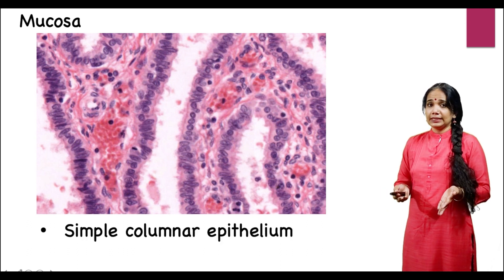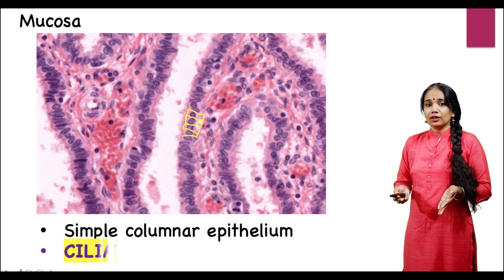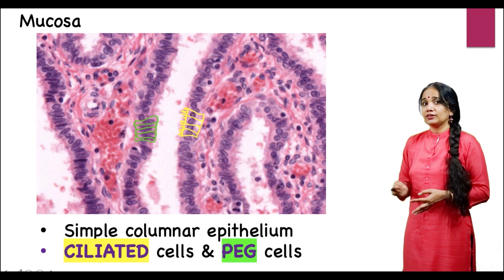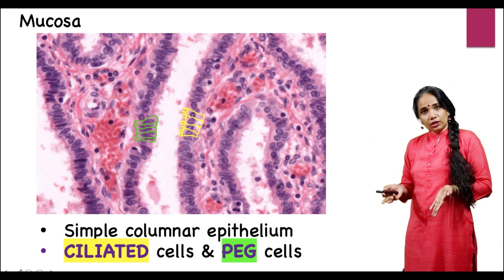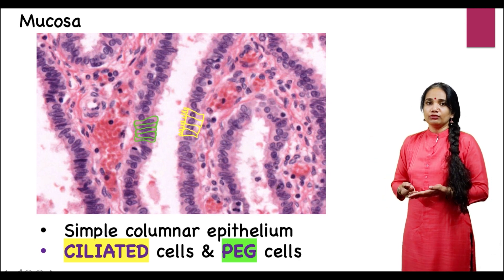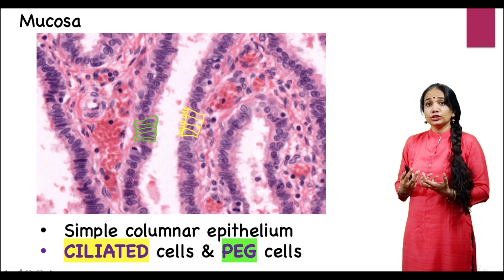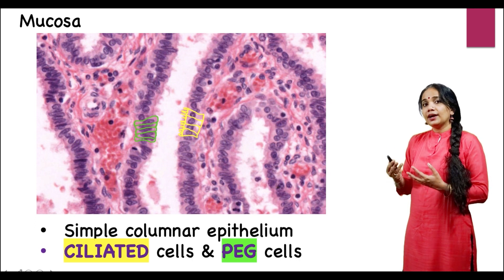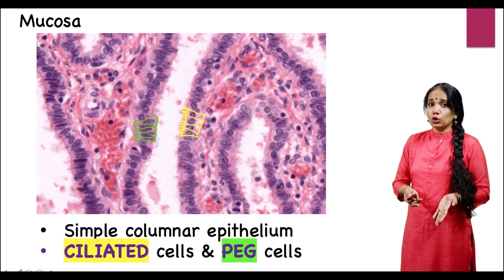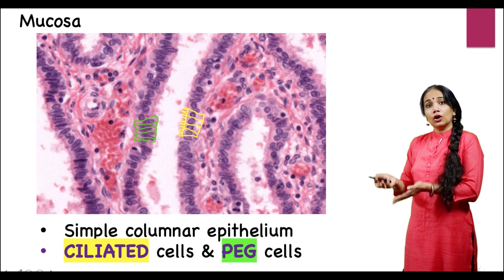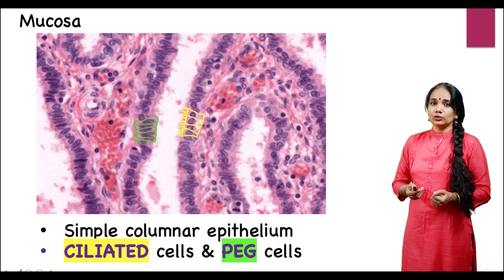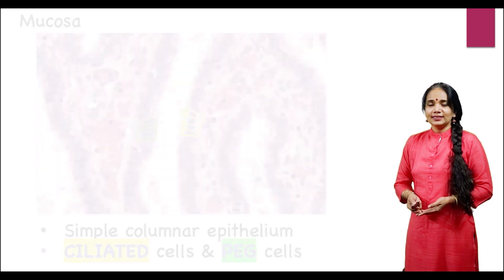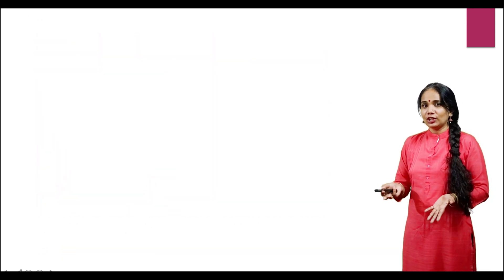There are two types of simple columnar epithelium cells. One type is called ciliated cells, and the other are called peg cells, which are drawn here. Peg cells do not have cilia — their basic function is to provide nutrition to the ovum and to the zygote as it passes through. Ciliated cells help in the transport of the ovum, the zygote, or the sperm — the cilia beat and allow for the movement of these structures.